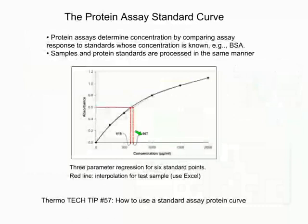For the protein assay standard curve, you normally use bovine serum albumin, though ideally you would use your own protein. There is a useful PDF from Thermo giving details on how to construct the standard curve. The construction process is fairly straightforward, but having good reference materials matters.